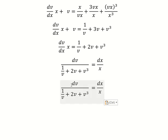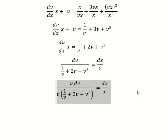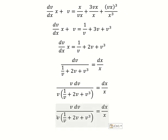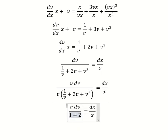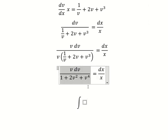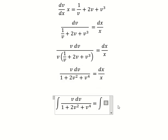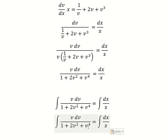Next we need to multiply by v on the numerator and denominator. So this one we have one plus two v squared and v to the power of four. Next we put the integration for both sides — so this one, that is about identities.